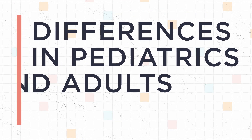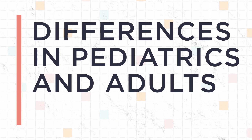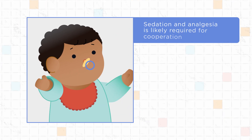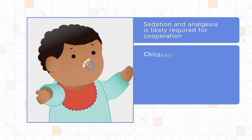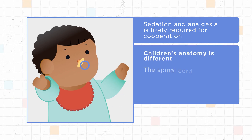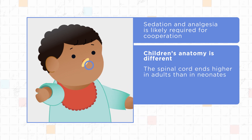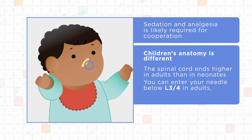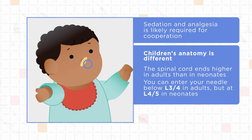What makes performing a lumbar puncture in pediatrics different from one in adults? First, sedation and analgesia is likely required for cooperation. Second, children's anatomy is different. The spinal cord ends higher in adults than in neonates, meaning you can enter your needle below L3-4 in adults, but at L4-5 in neonates.